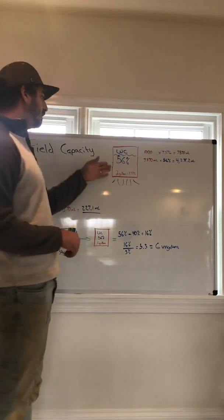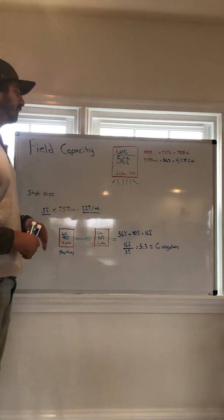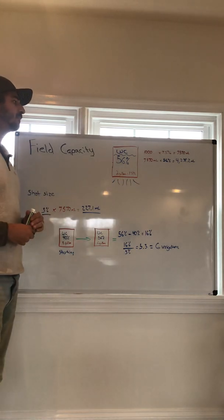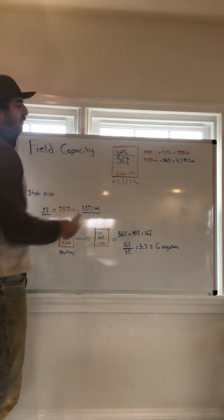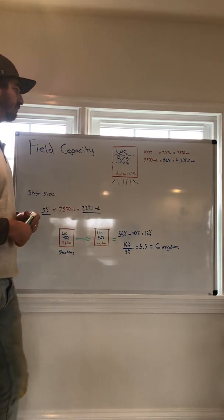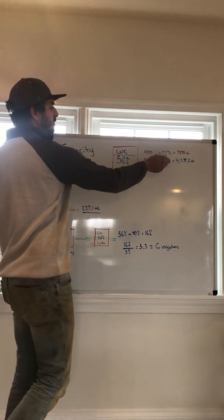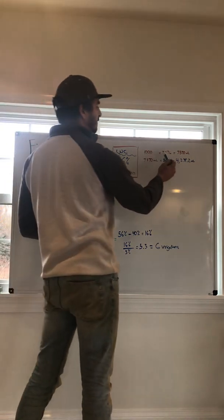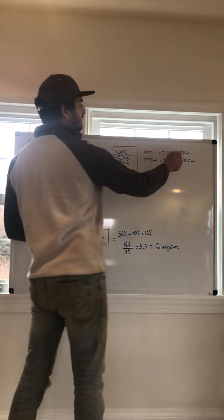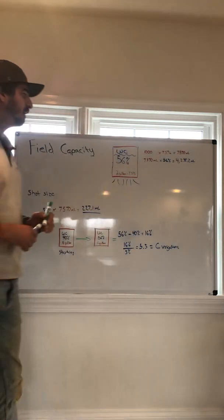So in this scenario, we're going to be looking at a two-gallon coco bag and what this all represents. So two gallons of coco equals 7.57 liters of substrate. To take liters and turn it into milliliters, we're going to multiply it by a thousand. So a thousand times 7.57 equals 7,570 milliliters.